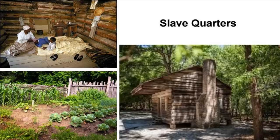Imagery of slave quarters shows: a vegetable garden, the outside of slave quarters, and the inside of slave quarters as depicted at historical sites. Inside, slaves were sleeping on the ground. There are no windows, and this particular one is considered quite luxurious in the sense that it actually has a fireplace built in. The conditions are very simple and not the nicest.